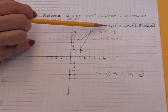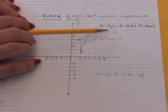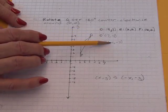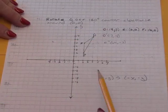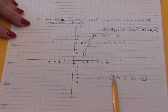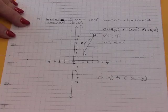So notice that to go 180 degrees counterclockwise, you don't have to do it in two steps. You can just look at the original point and multiply both coordinates by negative 1. So that's our rule. Whatever you have in X and Y, multiply them each by negative 1 for the image.